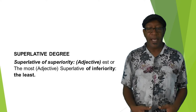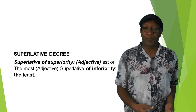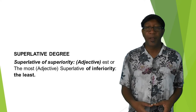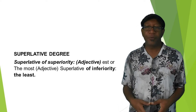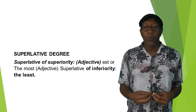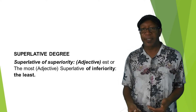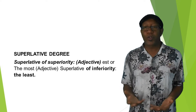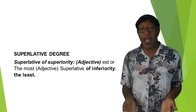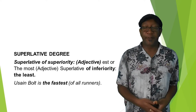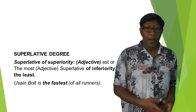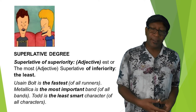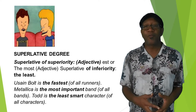We also have the superlative degree. It has the superlative of superiority, when you use the adjective plus '-est' when it's a short adjective, and 'the most' and the adjective when it's a long one. We also have the superlative of inferiority — in both cases, for short and long adjectives, we use 'the least'. Here we have some examples: Usain Bolt is the fastest of all runners. Metallica is the most important band of all bands. And Toddy is the least smart character of all characters.